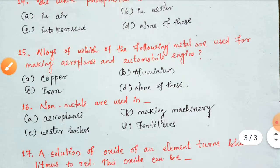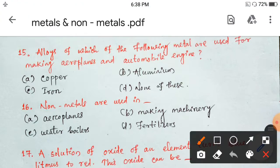Next. Alloys of which of the following metal are used for making aeroplanes and automobile engines? Copper, aluminium, iron, none of this. That is your aluminum. Alloys of aluminium are used for making aeroplanes and automobile engines. Option B. Next, non-metals are used in aeroplanes, making machinery, water boilers, fertilizers. Non-metals are used in fertilizers. Option D.